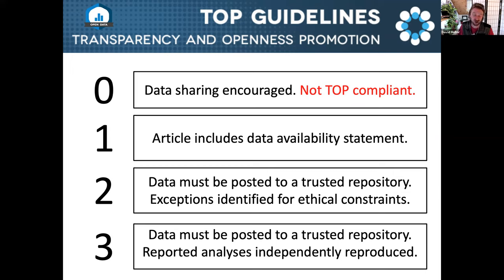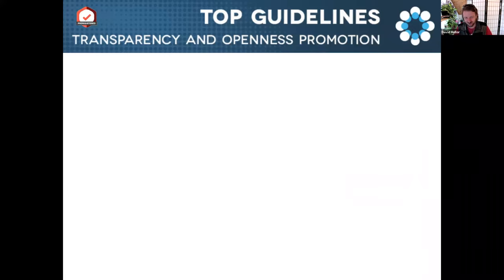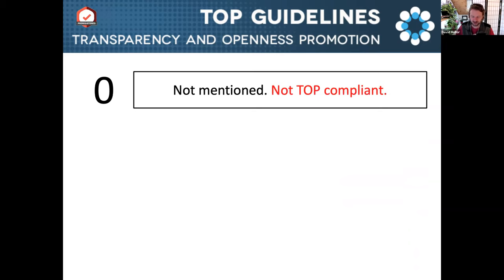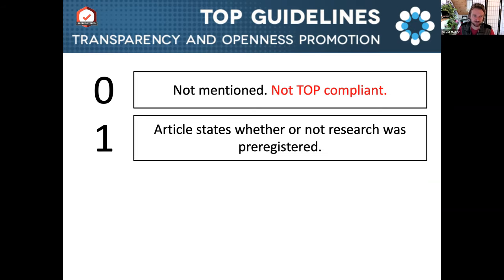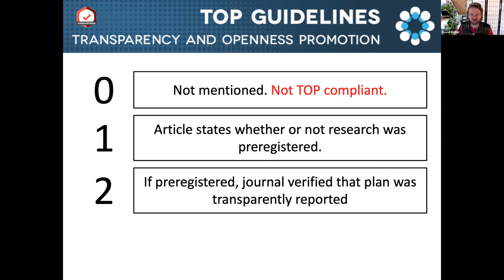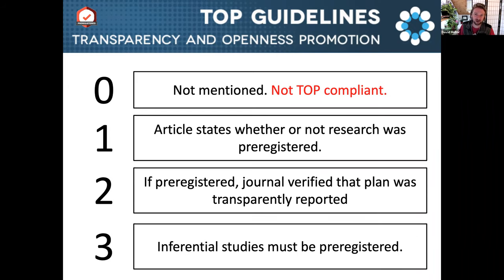Now I'll give an example of the pre-registration standard, which flips the order a little bit, so pay attention. For pre-registration, level zero — not compliant — the practice is not mentioned in the grantee or author guidelines. Level one, the article states whether or not the work was pre-registered, and if it does, a link is included. Level two, if the work was pre-registered, the journal or reviewers verify that the plan was transparently reported, and deviations or changes in outcomes were transparently disclosed. Level three, inferential studies must be pre-registered.